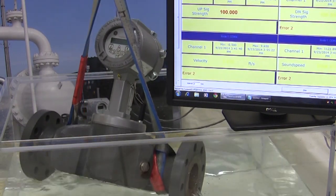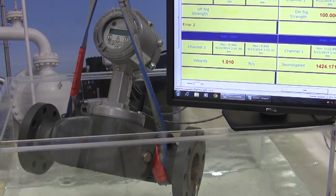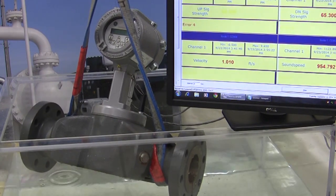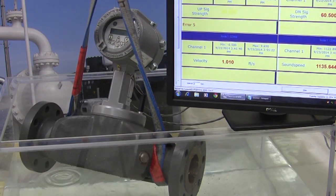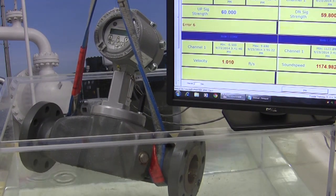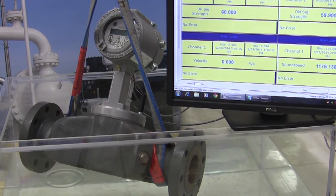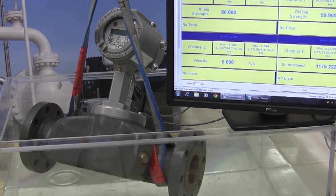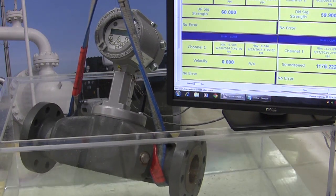Meter is now out of the water. Water is draining out of the meter. You can see the countdown timer is running. The sound speed is coming back down. We're down 10 seconds. It's now reading 1175, and the meter is now reading zero feet per second.